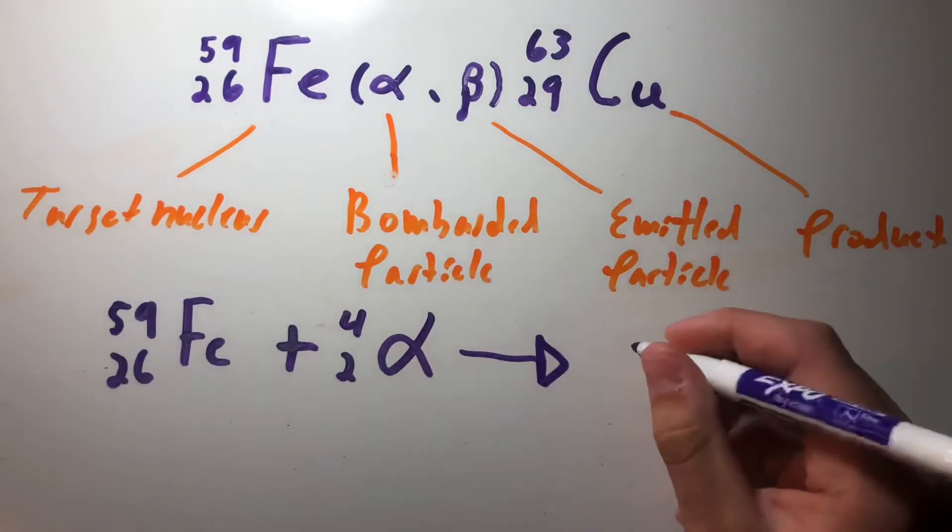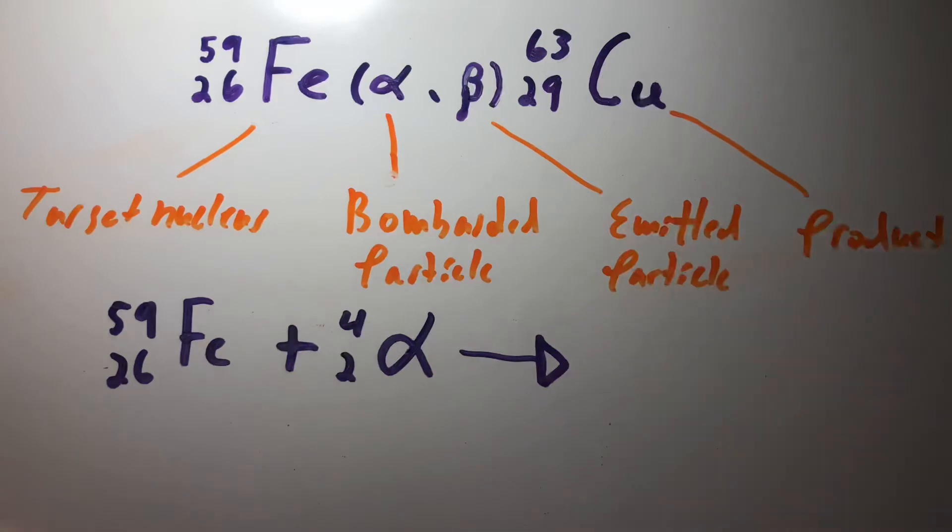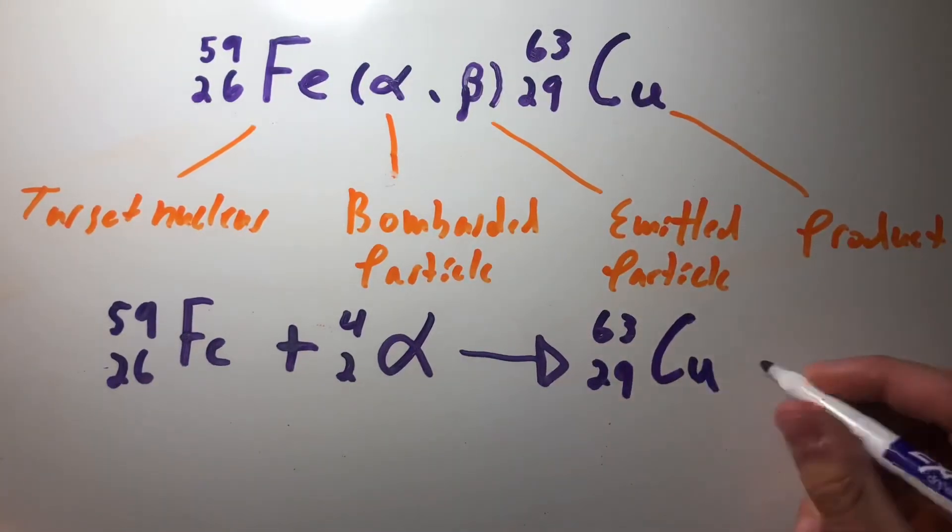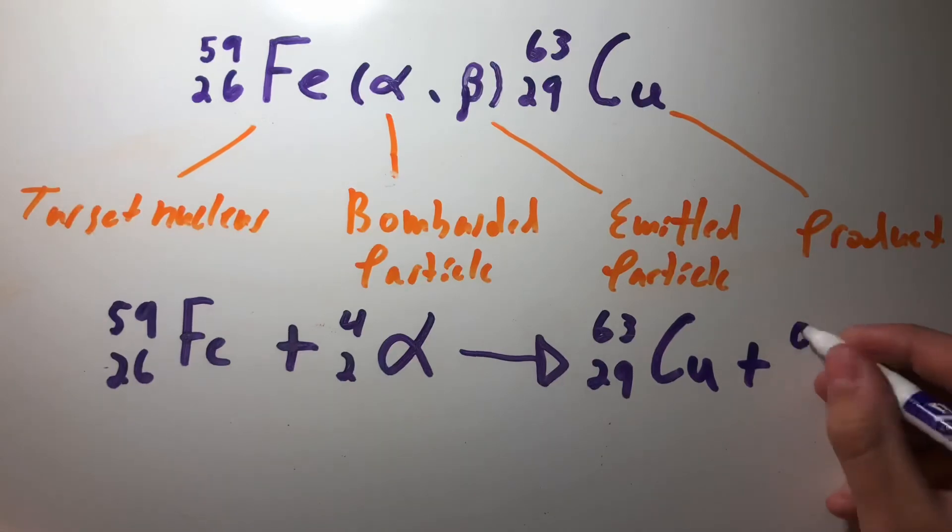Now we're going to our copper, which is our product, copper 63, plus our beta particle.